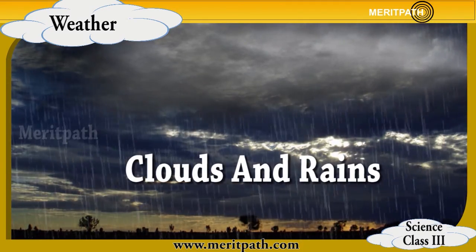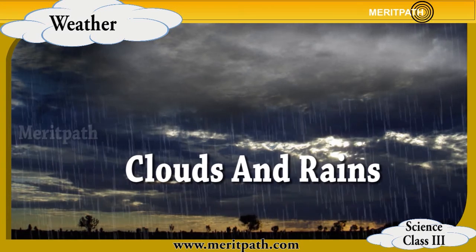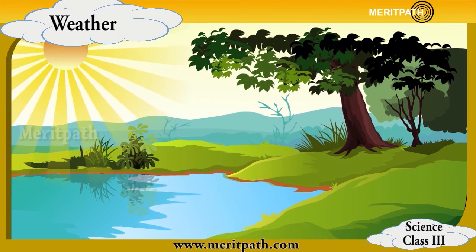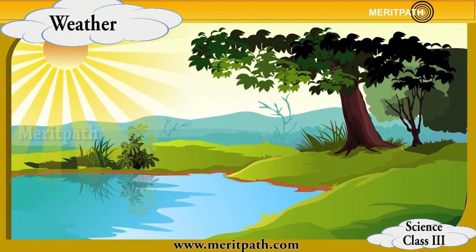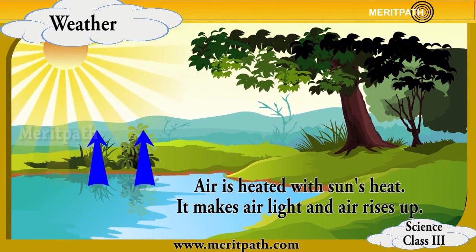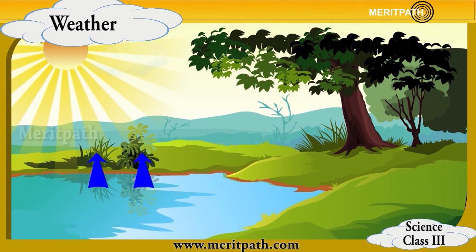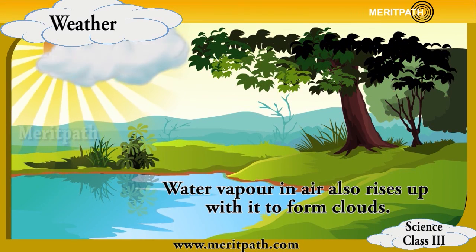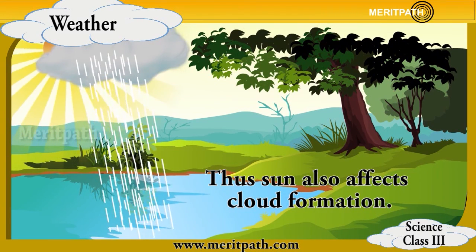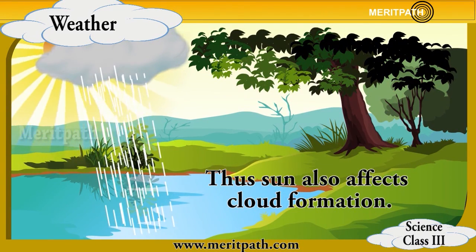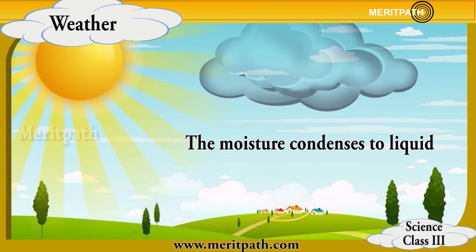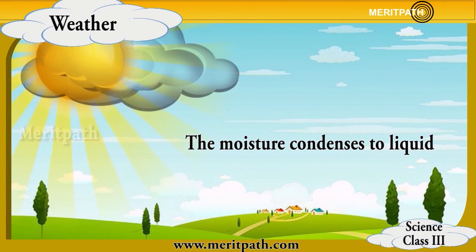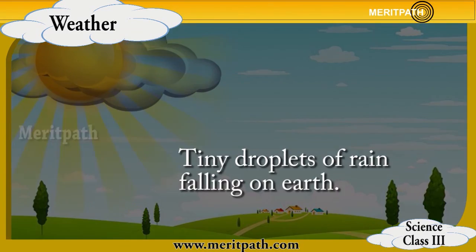Clouds are formed when the air rises, expands, and cools. Rain occurs when the warm air cools and the moisture condenses to liquid, forming tiny droplets of rain falling on earth.